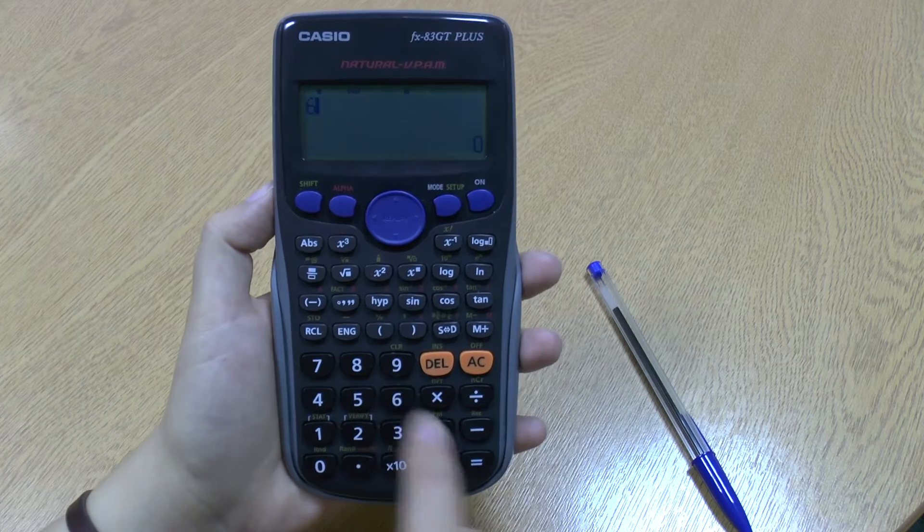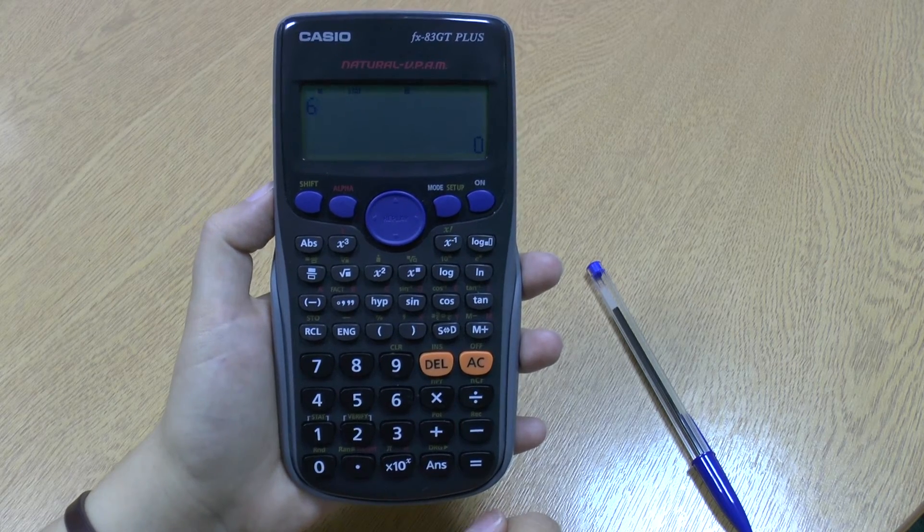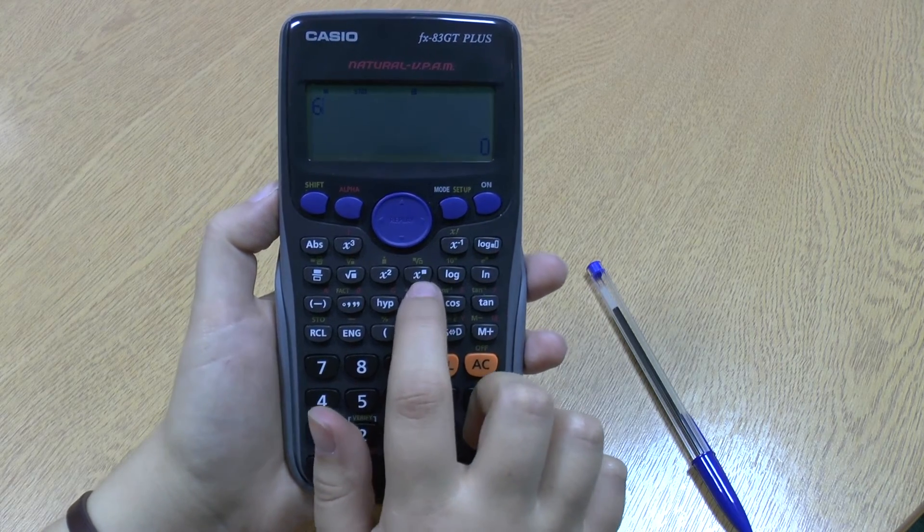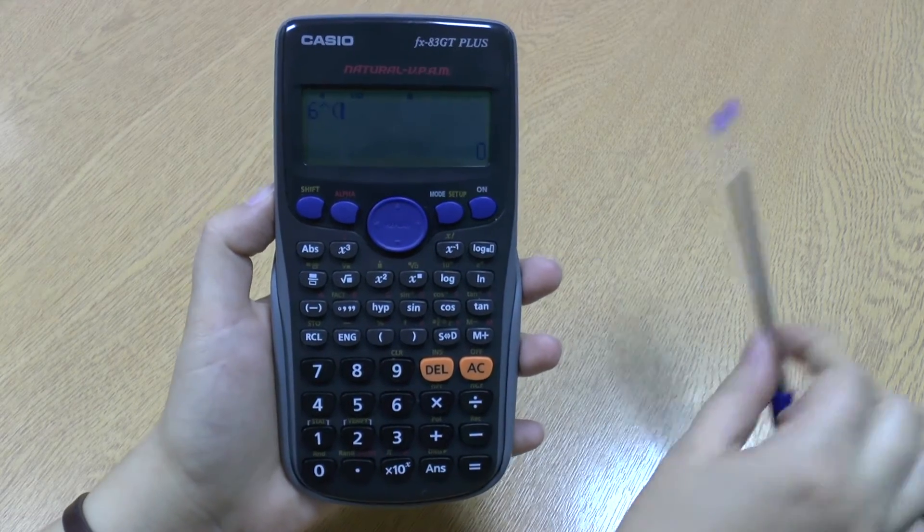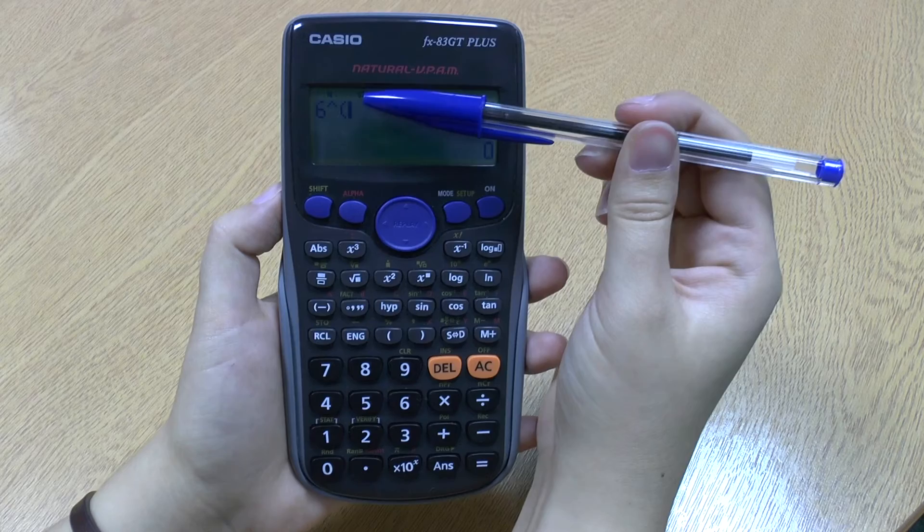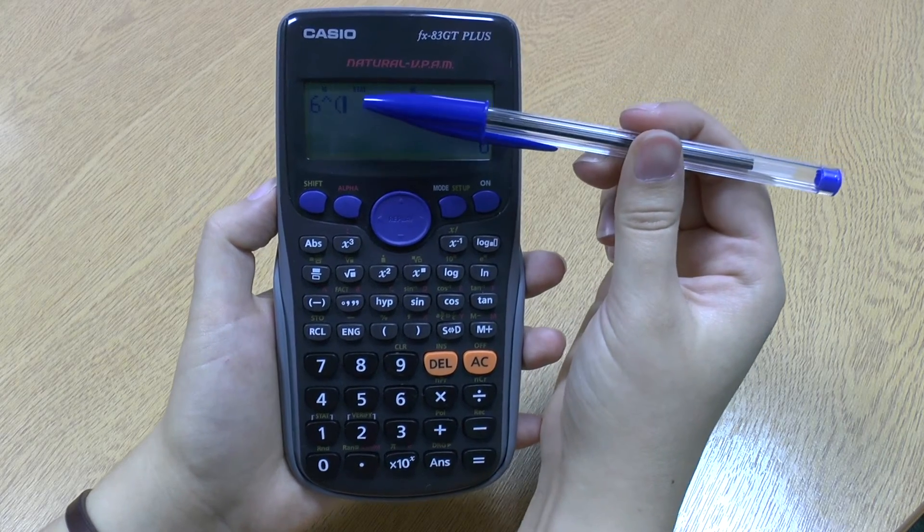So I'll go to 6. Then I want my cubed. So I go to the x to the box. And as you can see, it comes up on the screen with this little hat symbol and an open bracket.